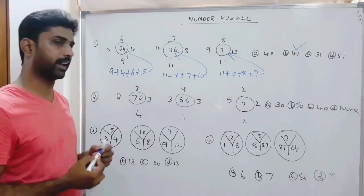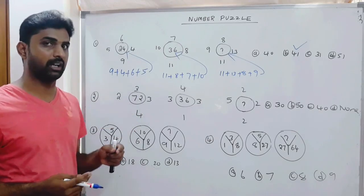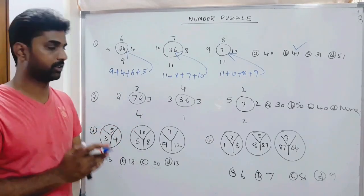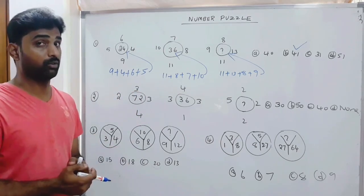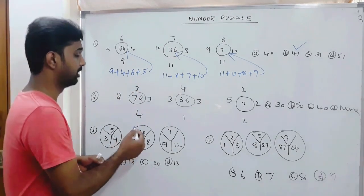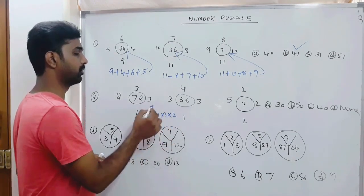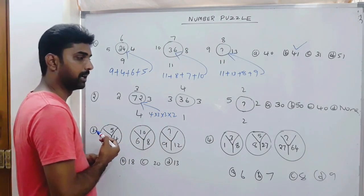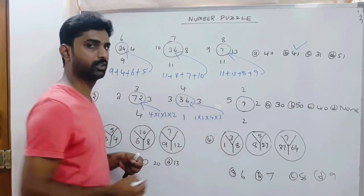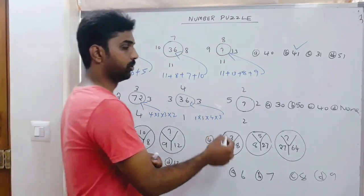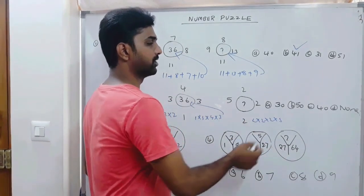And here also: 11 plus 13 is 24, 24 plus 8 is 32, 32 plus 9 is 41. Let us see the second example. Here we have the same setup — single digits and double digits. So: 2 × 2 = 4, 4 × 4 = 8 (with 5 alongside), and 8 × 5 is 40.